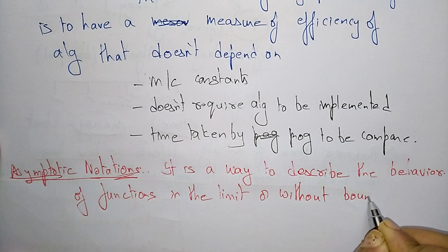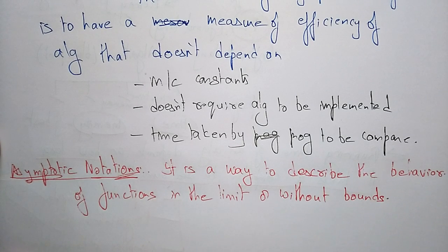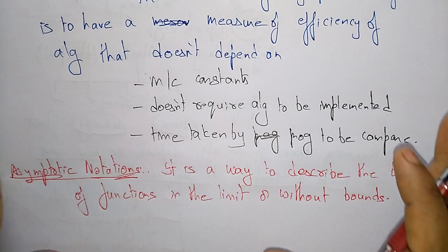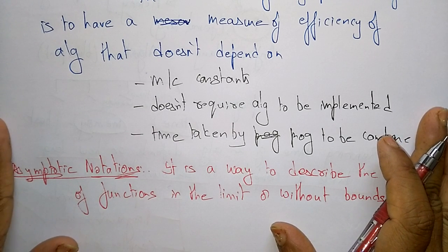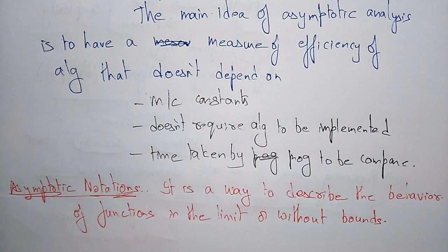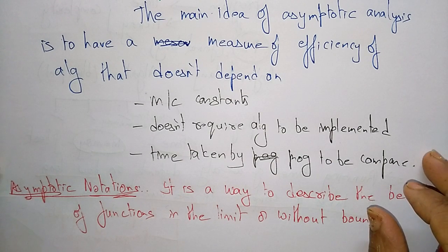The running time of an algorithm is expressed as a function of input size. For large inputs, if the input size increases, the running time also increases. In the next video, I'll explain the different asymptotic notations and the growth of these asymptotic notations.